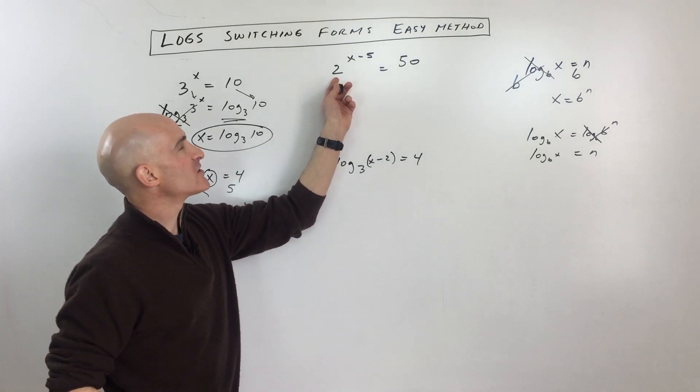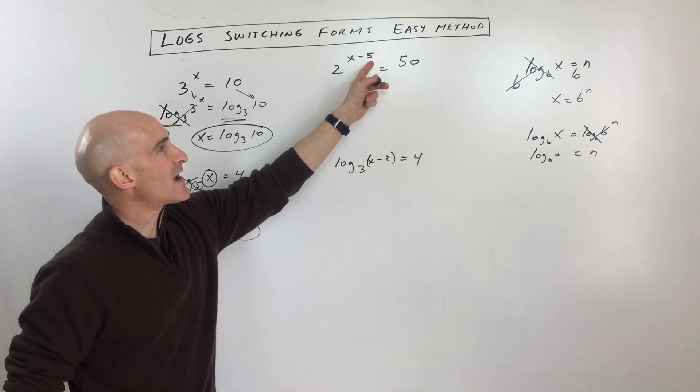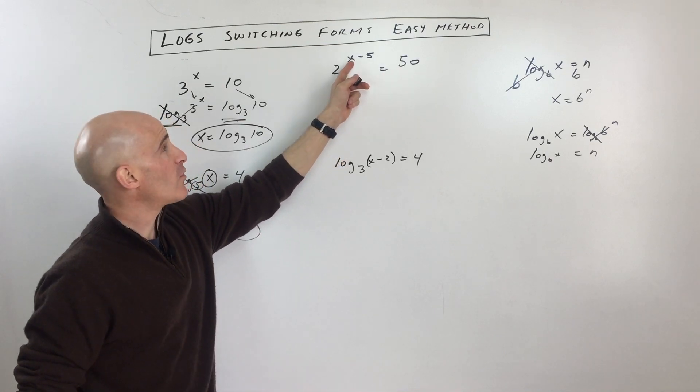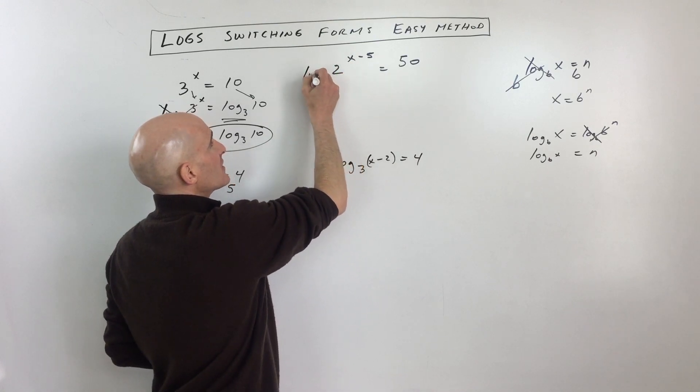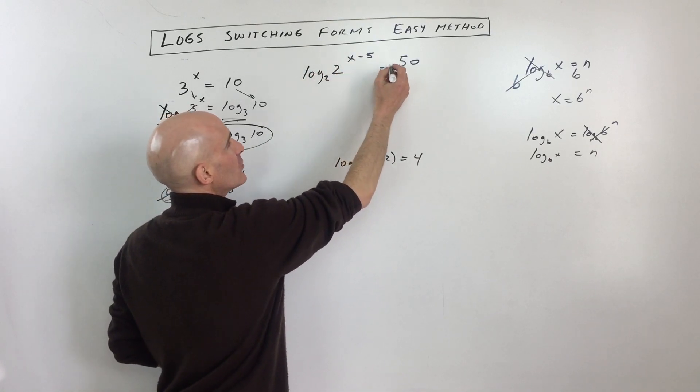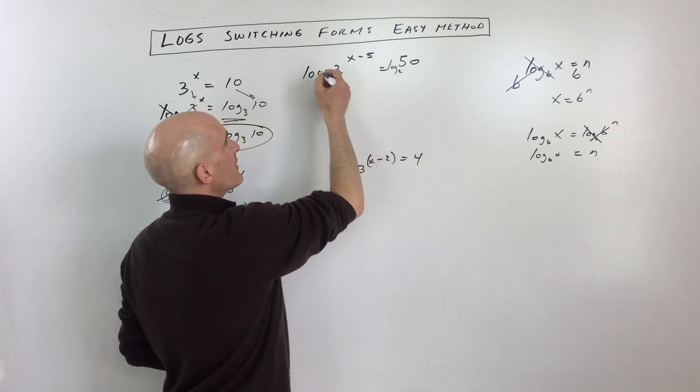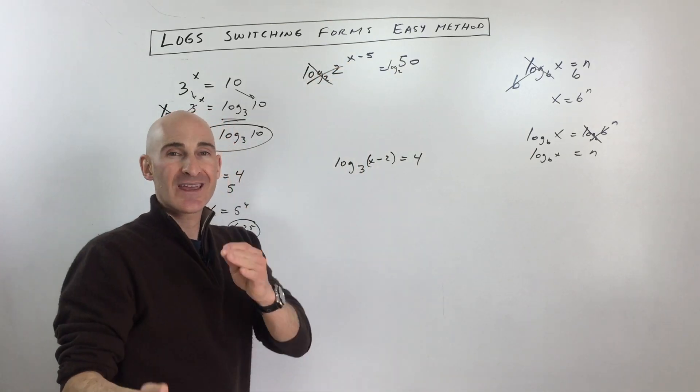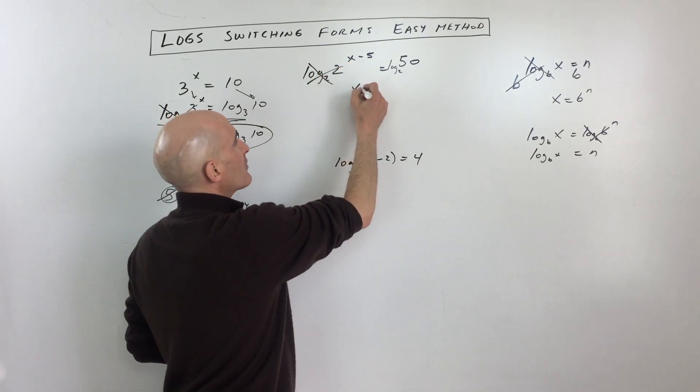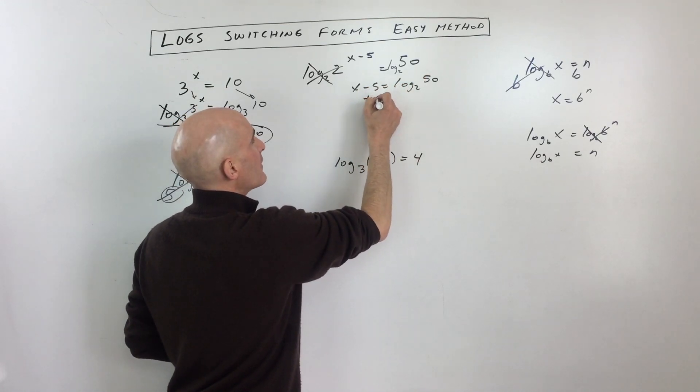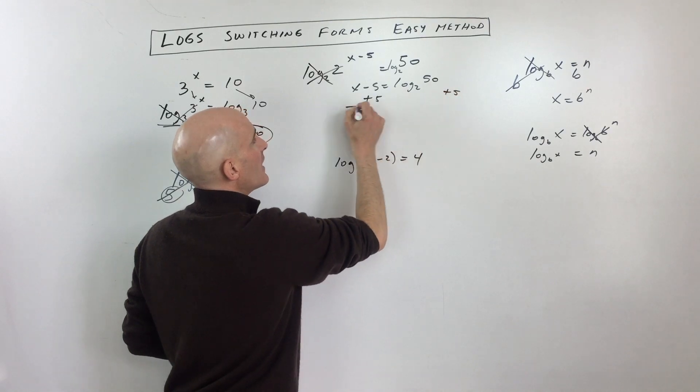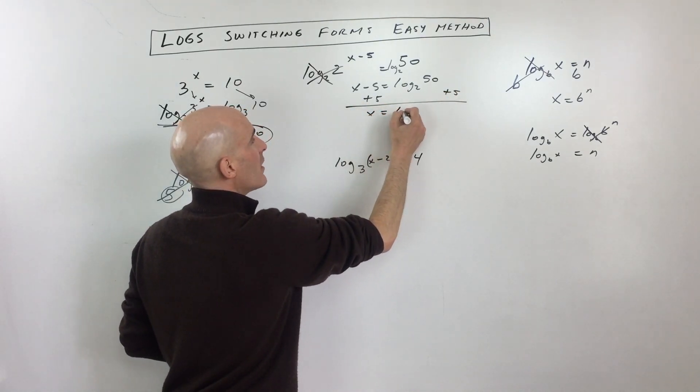Okay, two more examples. Now this one here we've got 2 to the x minus 5 power equals 50. We want to get that variable by itself, so we say well instead of exponentiating, let's just take the log base 2 of both sides. Let me squeeze that in there, and you can see those undo one another, they cancel each other out, and so we're left with x minus 5 equals log base 2 of 50. All we have to do is add 5 to both sides and you can see we've got x by itself.